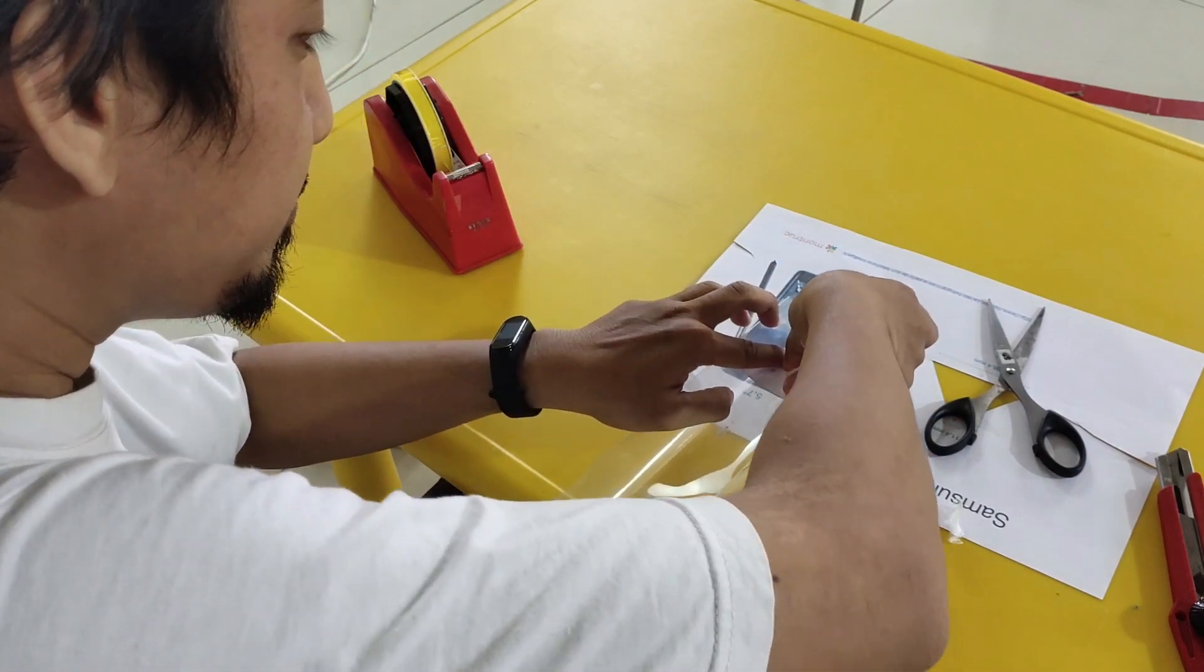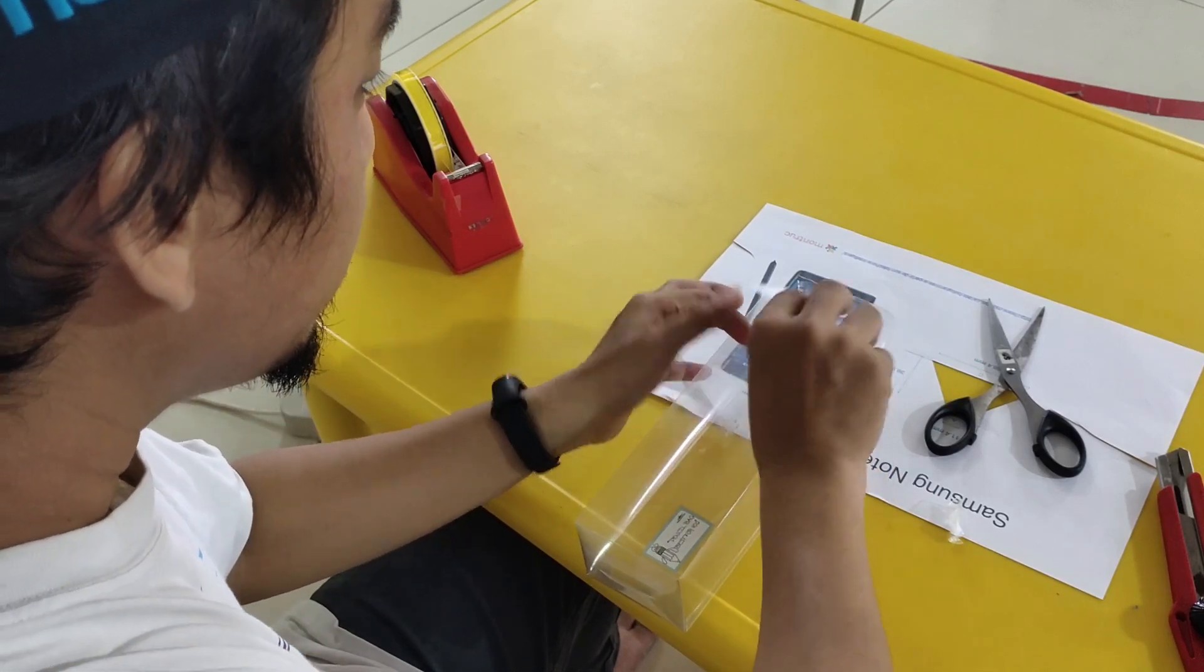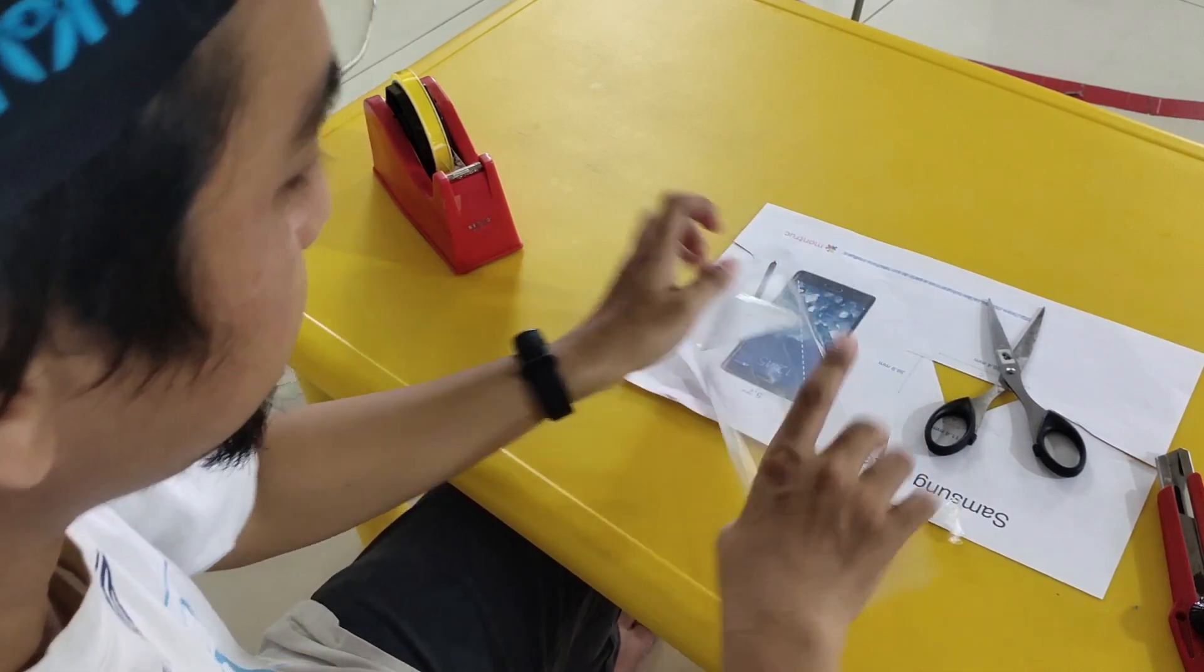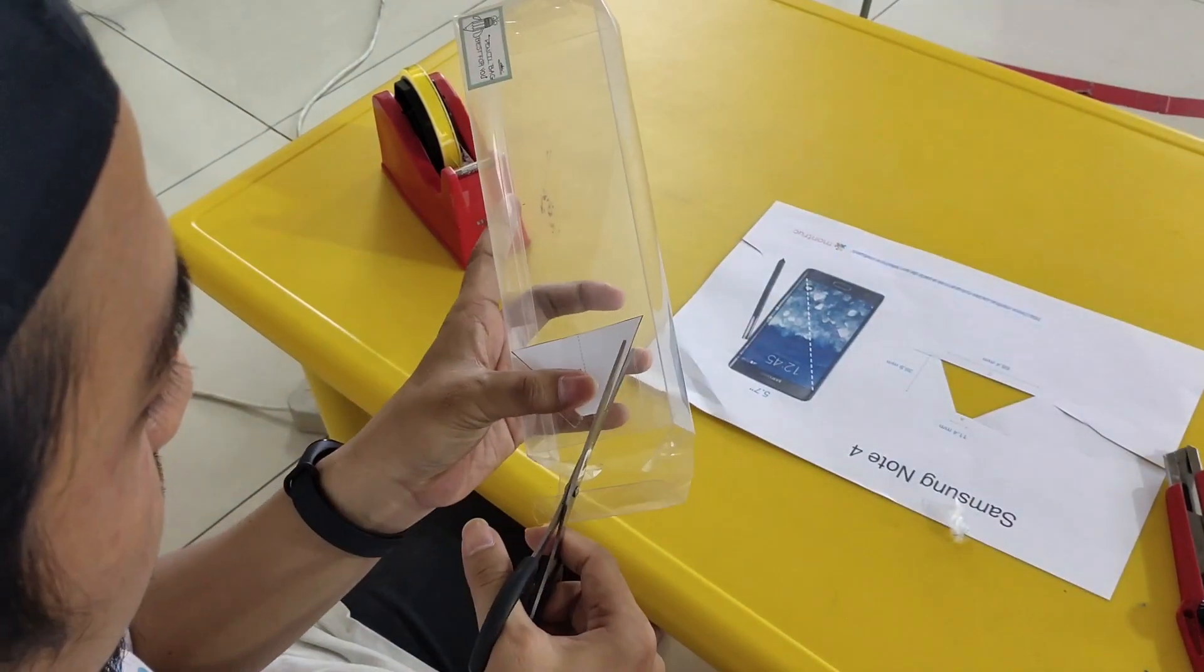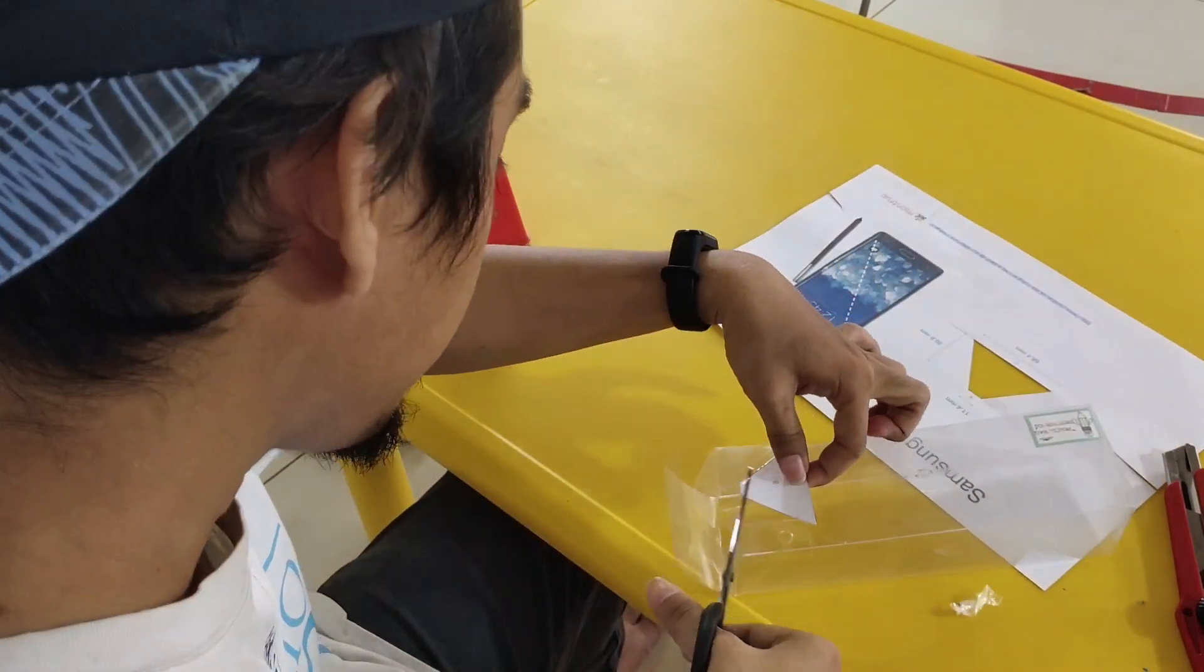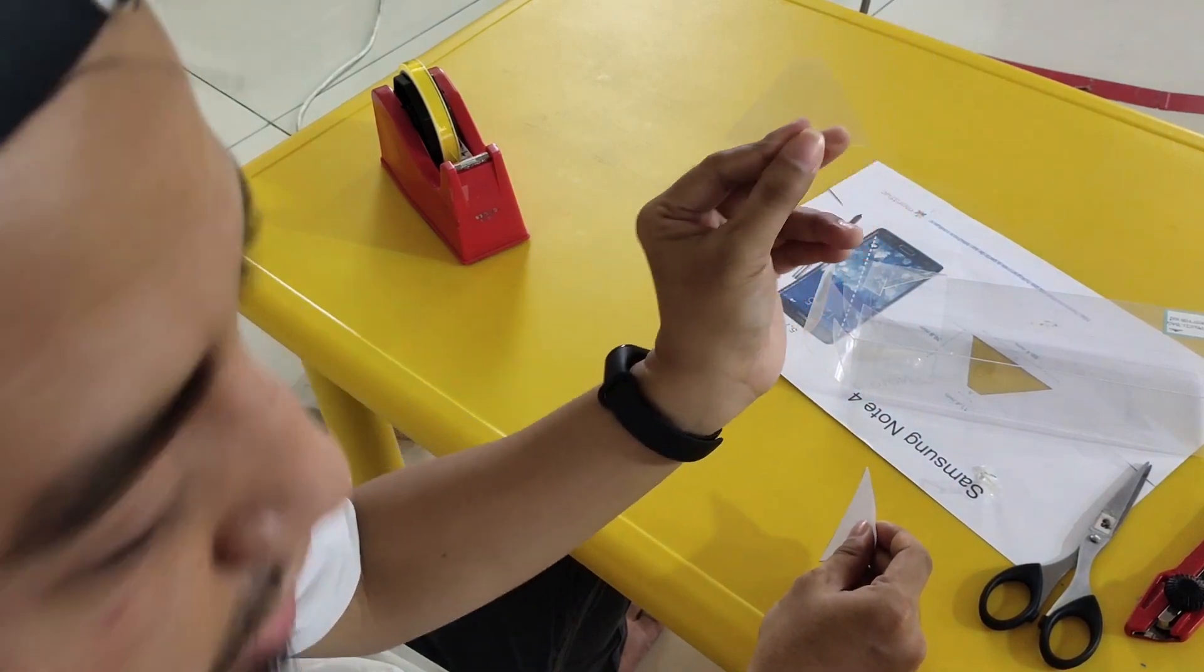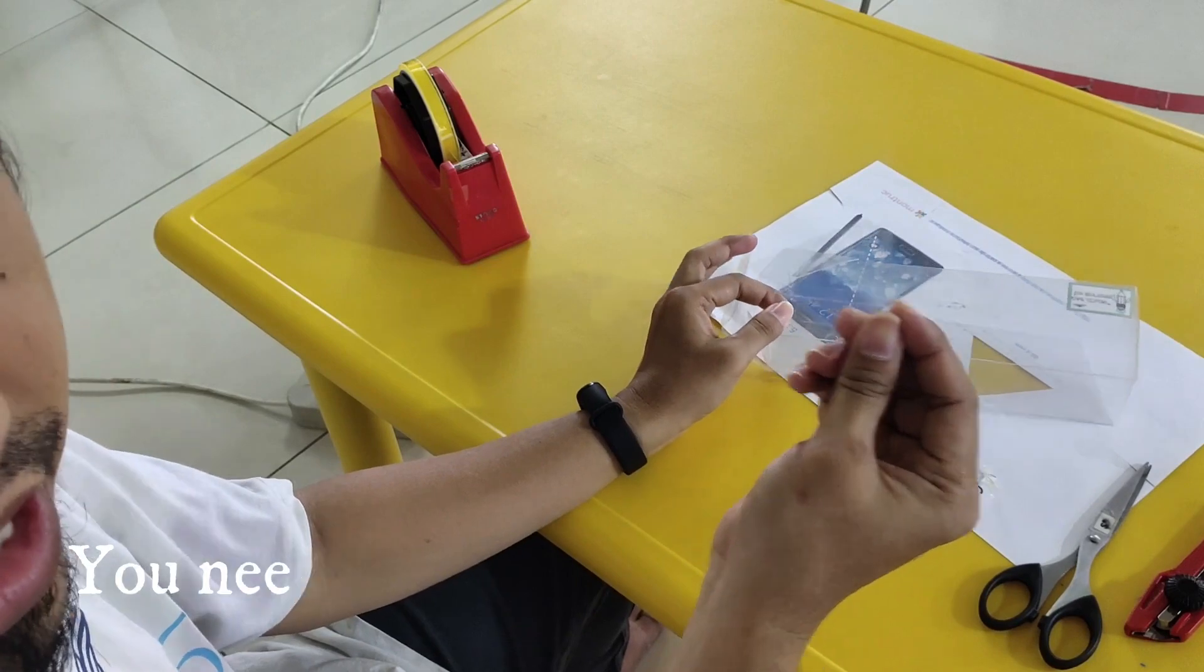Now, let's cut it. Use a tape so the paper will not move around when you cut it. Now, let's cut it. Okay, we are going to cut the shape. Now, let's make the other three shapes like this.